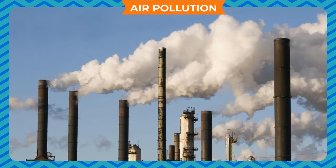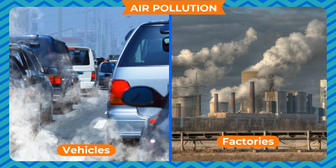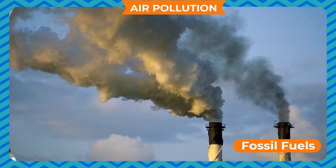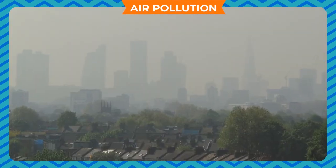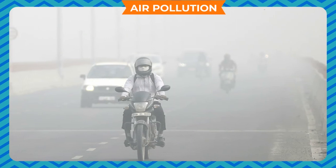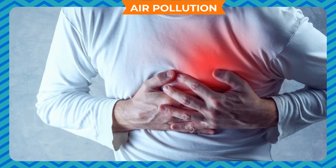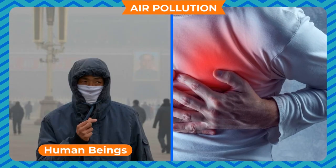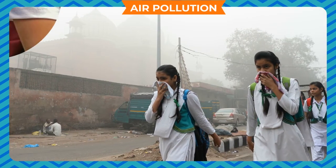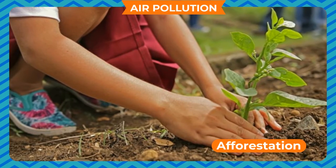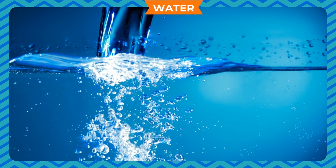Air pollution: smoke and harmful gases coming out from vehicles, factories, burning of garbage, and fossil fuels are released into the atmosphere and imbalance the quality of air. These impurities make the air polluted and cause various diseases in human beings and animals. Polluted air is harmful for breathing. Air pollution can be controlled by afforestation.